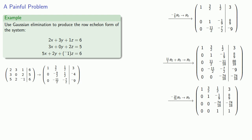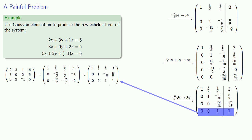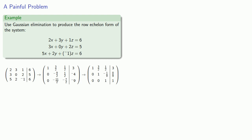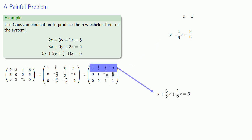This gives us our final row echelon form. Row 1: [1, 3/2, 1/2, 3]; row 2: [0, 1, -1/9, 8/9]; row 3: [0, 0, 1, 1]. Now that we're in row echelon form, we can solve the system through back substitution. The last row corresponds to z = 1, the next row to y - (1/9)z = 8/9, and the first row to x + (3/2)y + (1/2)z = 3.